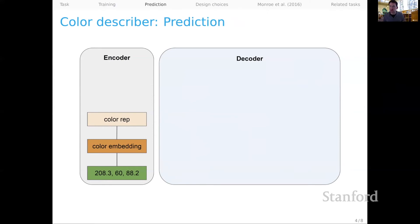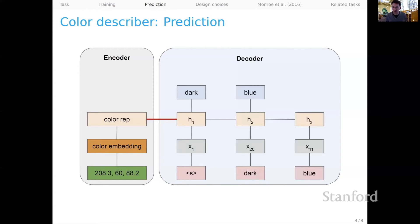At prediction time, of course, the sequence is not given. That doesn't change the encoder because the color representation is part of the model inputs. But then we have to decode and just describe without any feedback. So we proceed as we did before. And we predict dark here. And then dark has to become the token at the next time step because we don't know what the ground truth is. And we proceed as before and say blue. And then that becomes the third time step. And with luck there in that third position, we predict the stop token and the decoding process is completed.